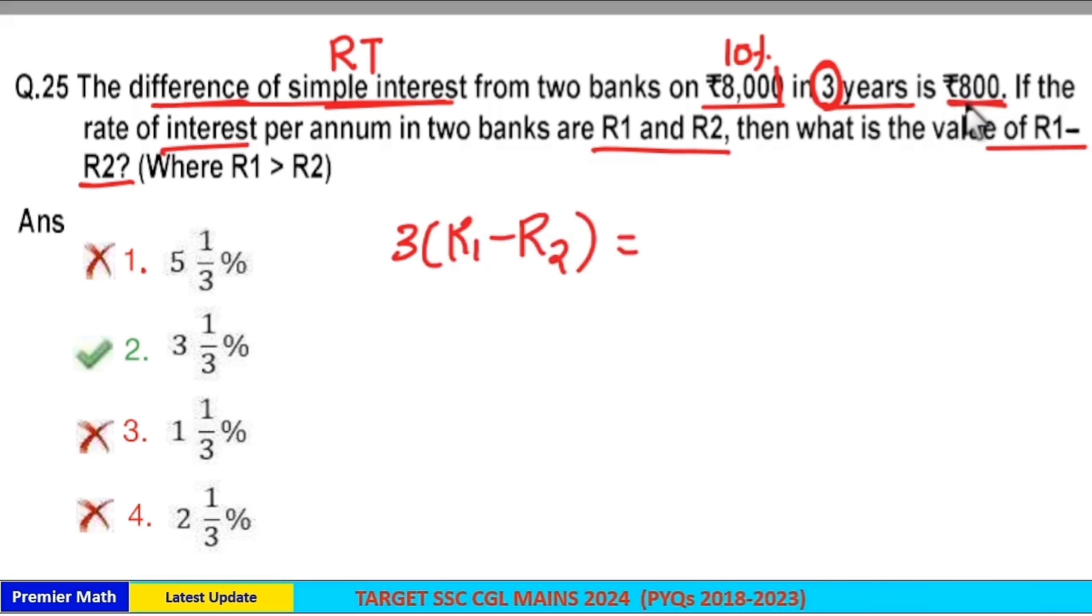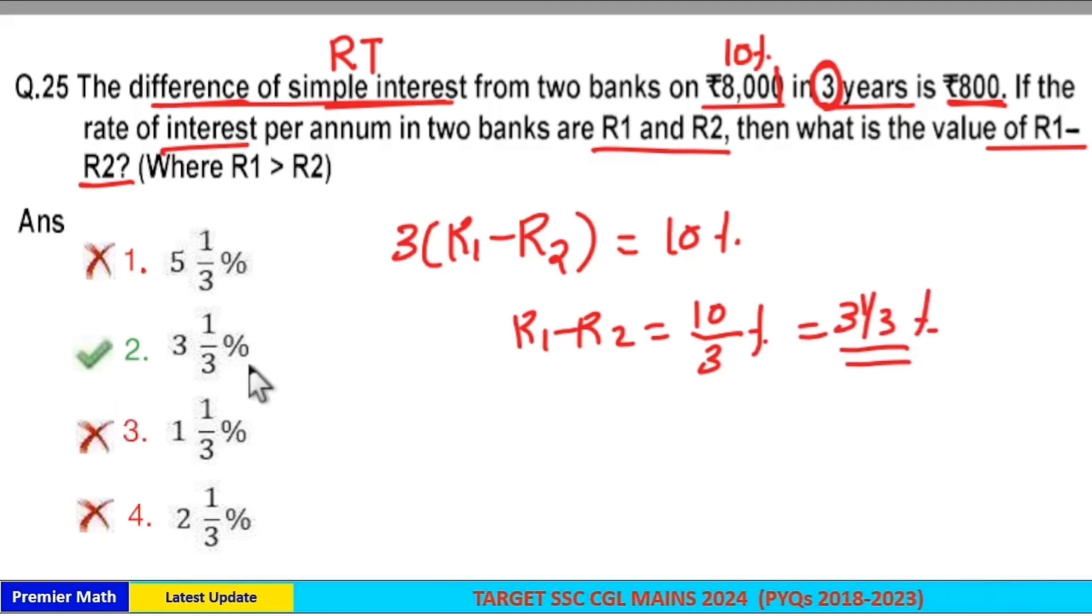Now write 800 in terms of rate which is 10 percentage. So 3 into R1 minus R2 is 10 percentage, means R1 minus R2 is equal to 10 by 3 percentage which is 3 and 1 by 3. So option 2 is your answer.